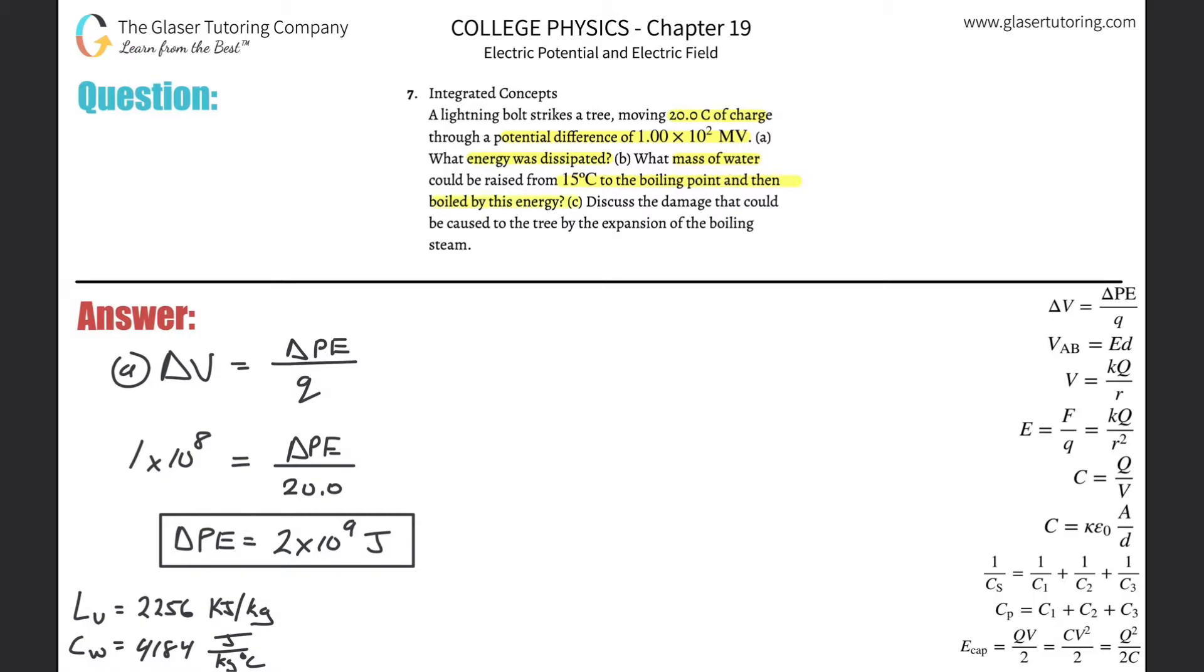So basically, now we have to remember that the total energy absorbed by the water would be equal to the energy needed to go from 15 degrees Celsius all the way to 100 degrees Celsius, plus the energy needed to change the phase—the energy of vaporization. This is all the way back to chapter 14 or something like that.